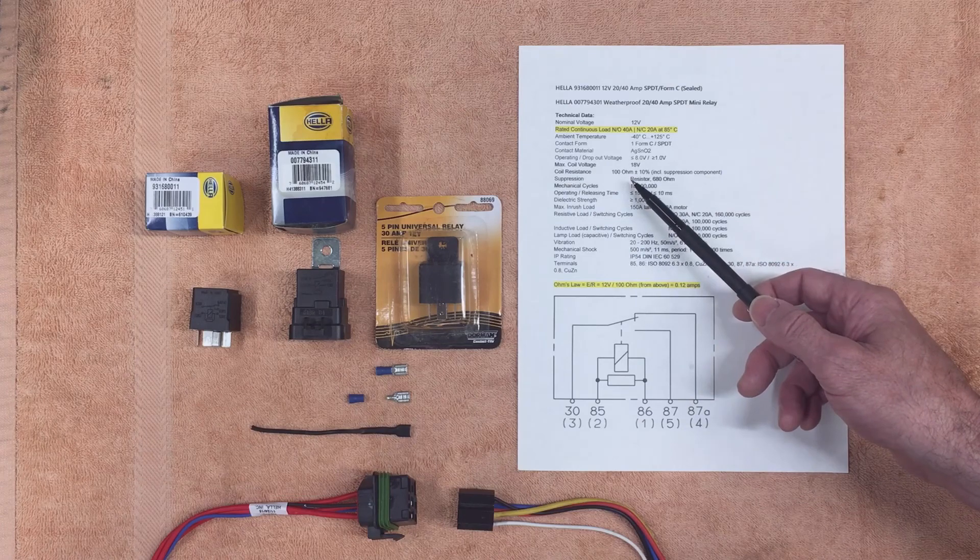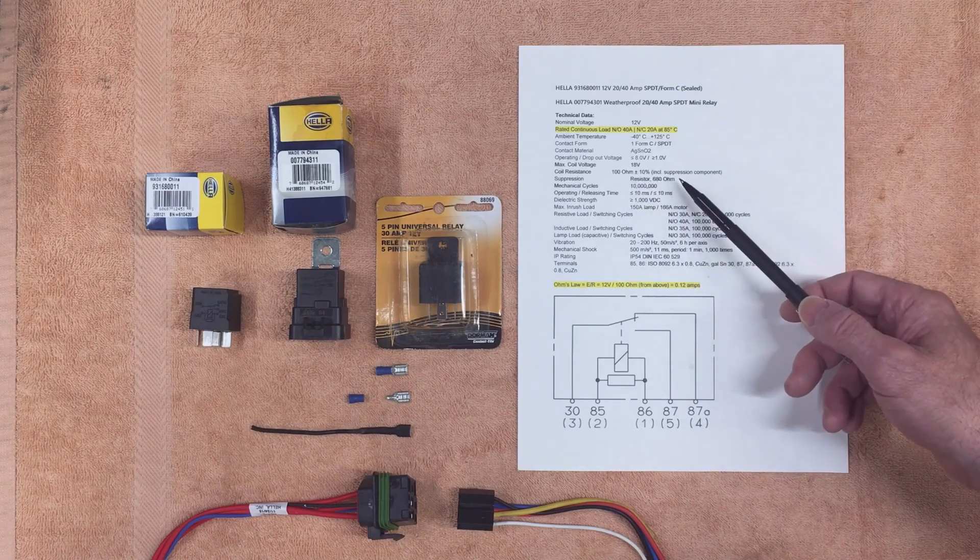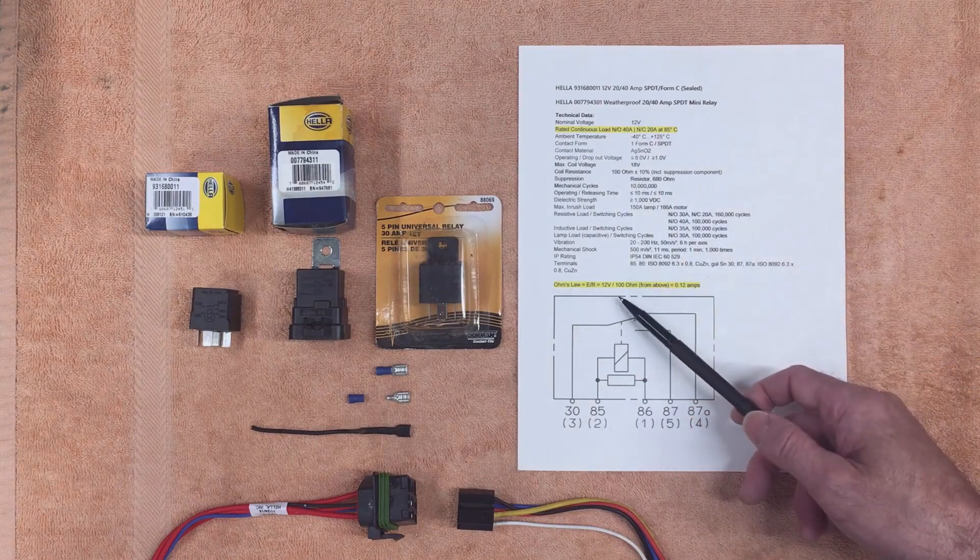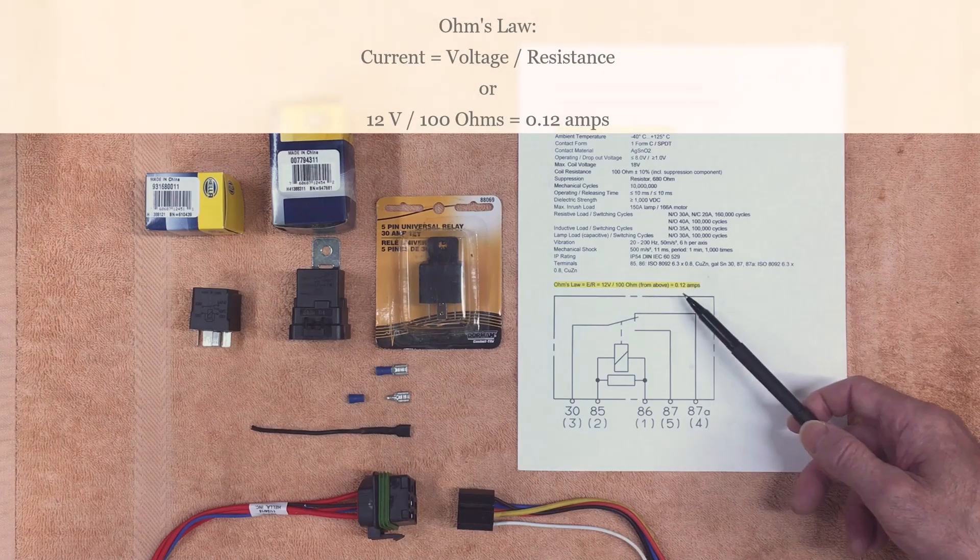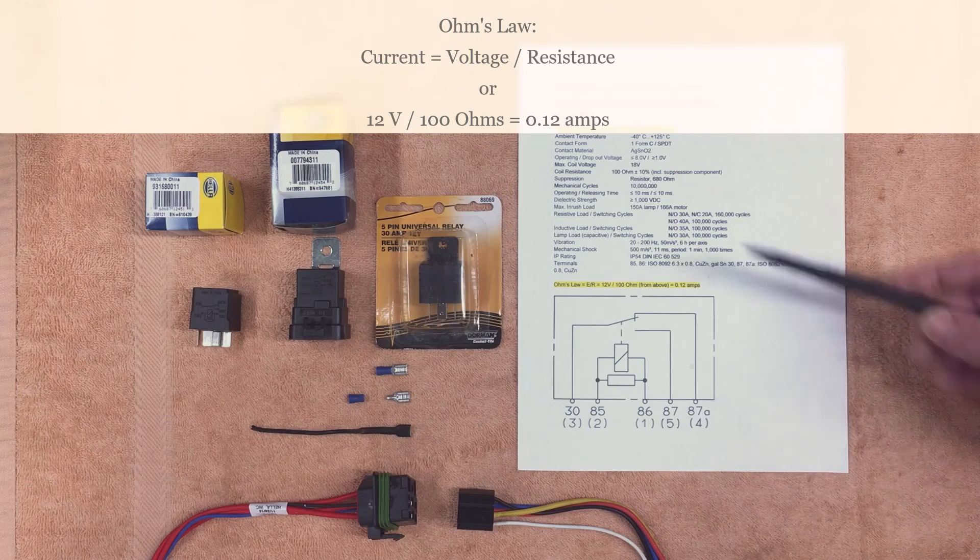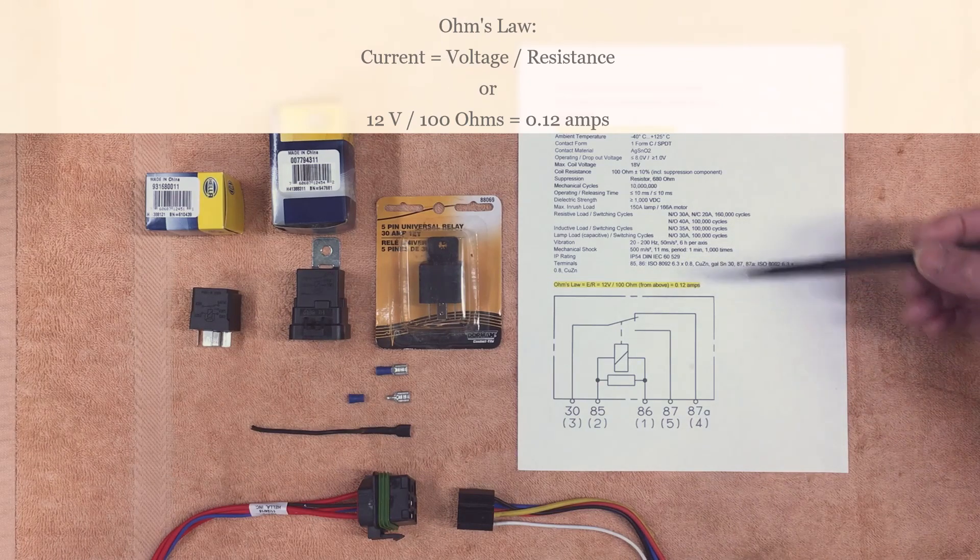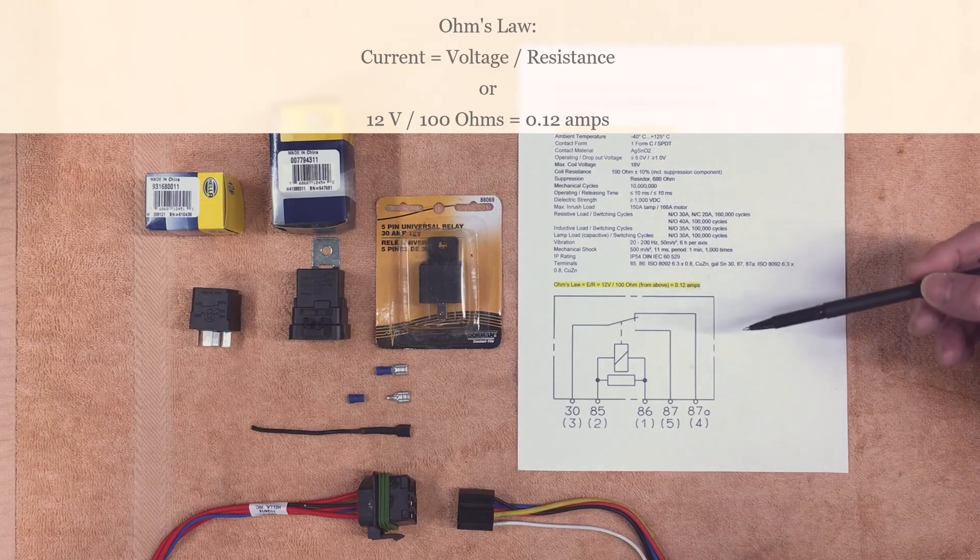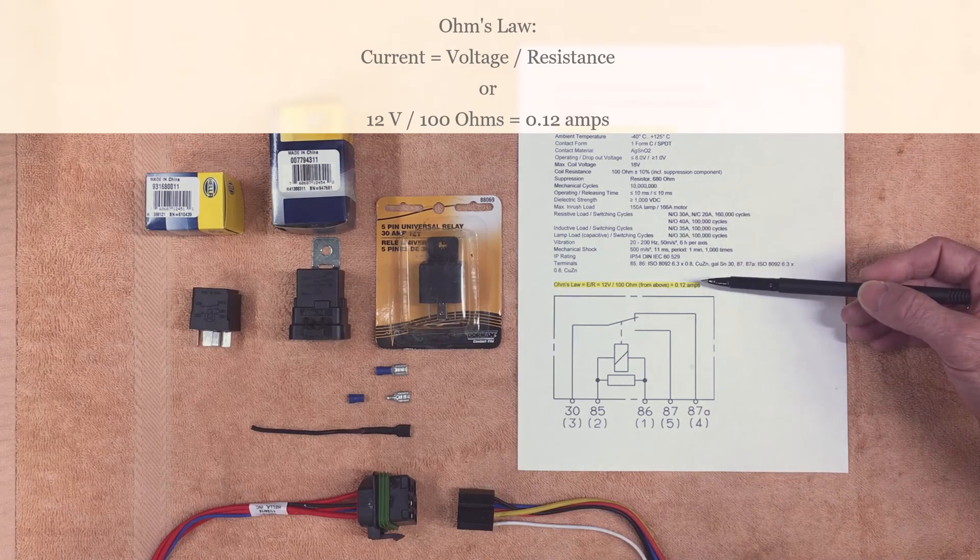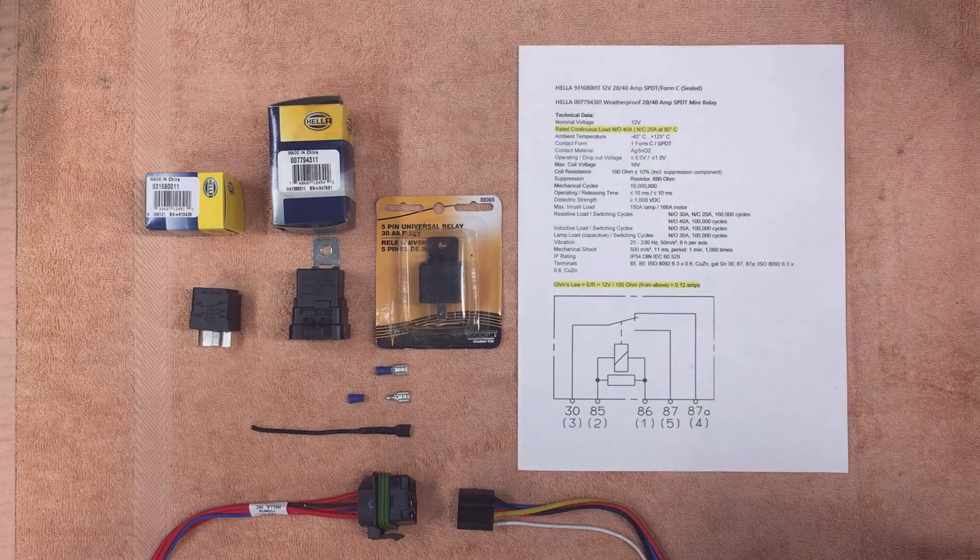So the coil resistance to pull in the coil requires 100 ohms plus or minus 10 percent. So that gives us by Ohm's law, in a 12 volt system, it requires about 0.12 amps. So you're only adding about 0.12 amps to the circuit that you're activating this coil with. So say you want to turn on your headlights and have a particular light come on, you add this to the headlight circuit, you're only adding 0.12 amps.